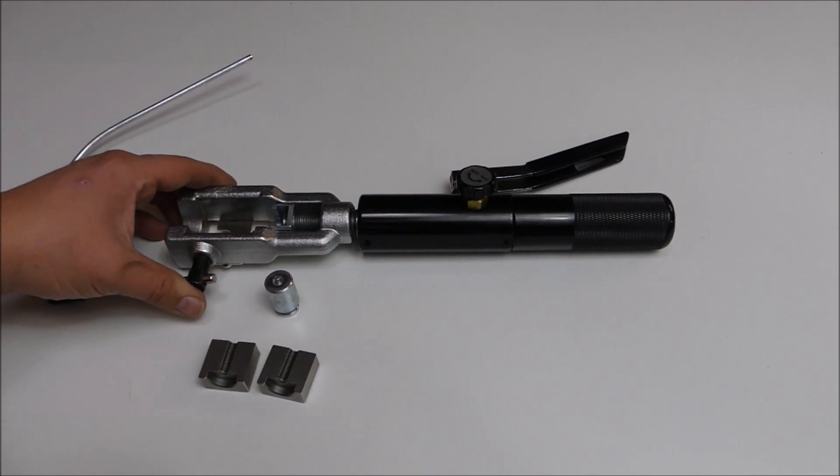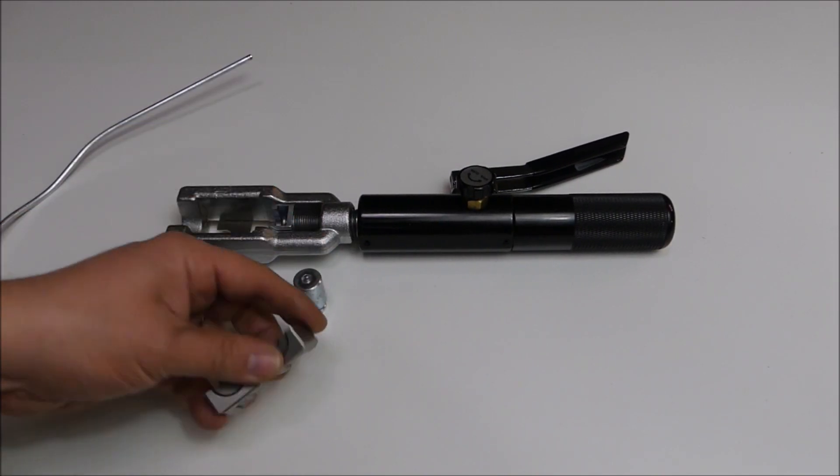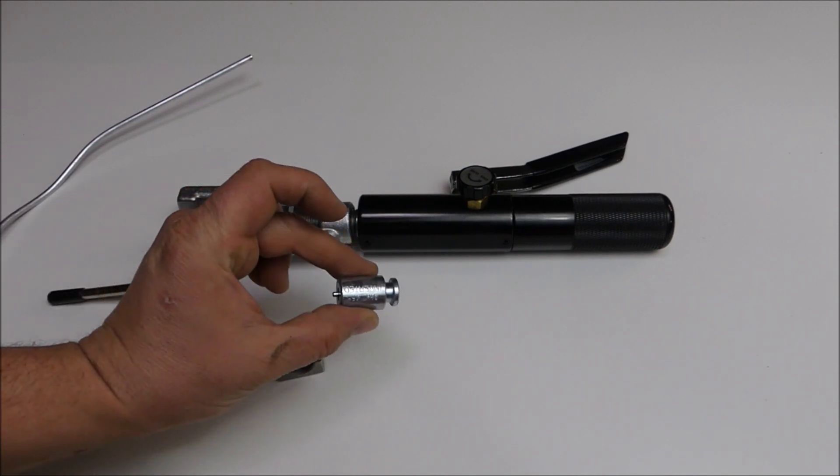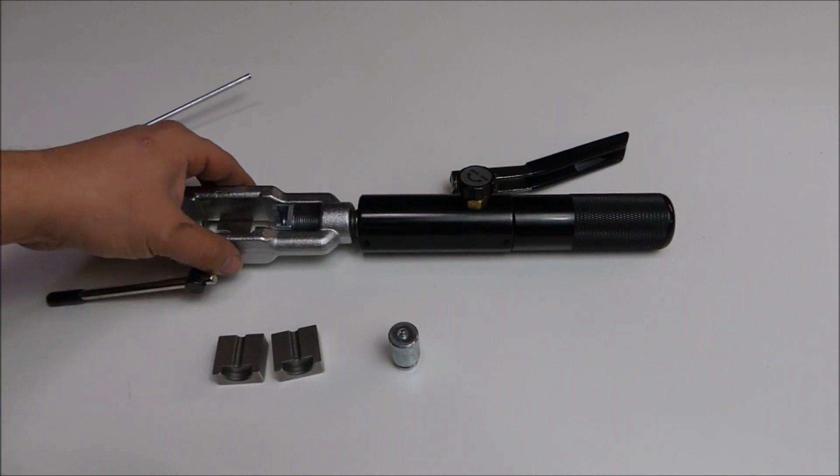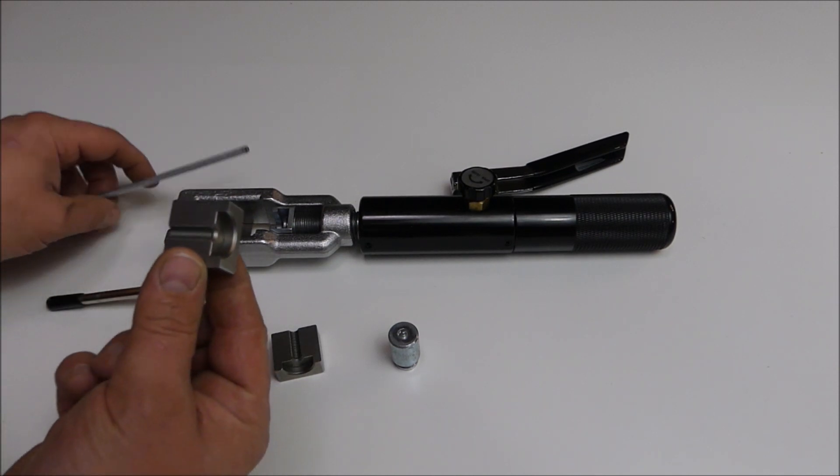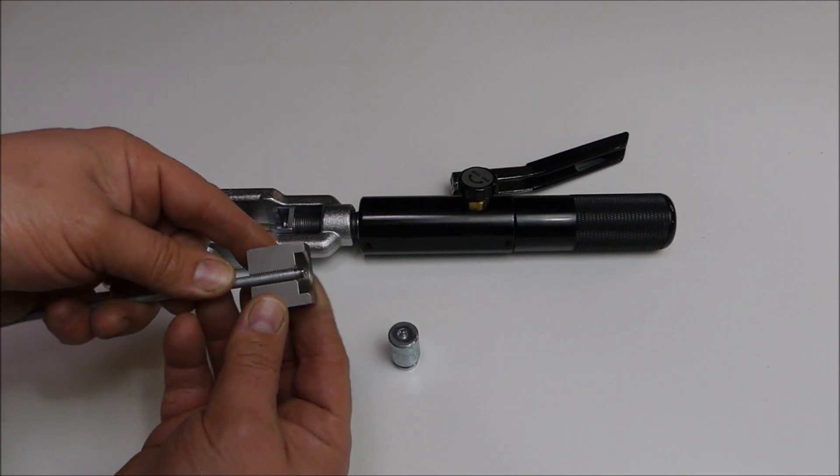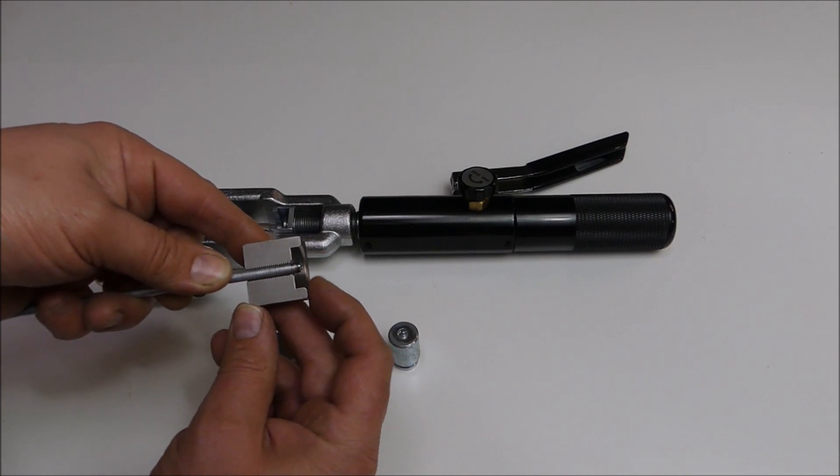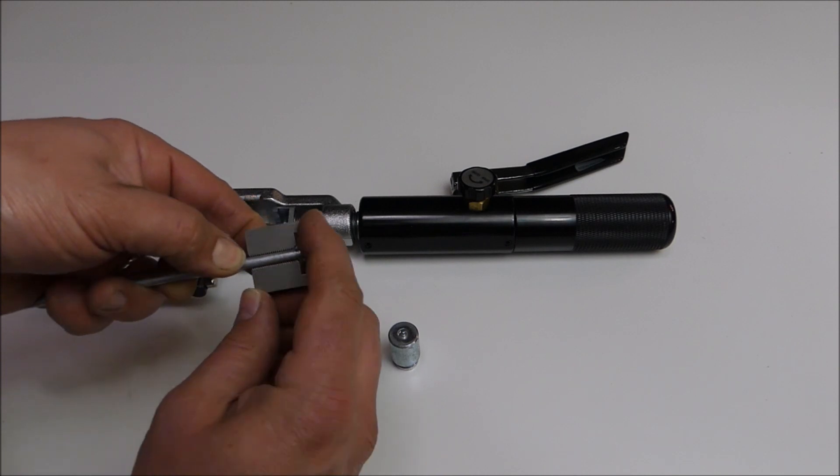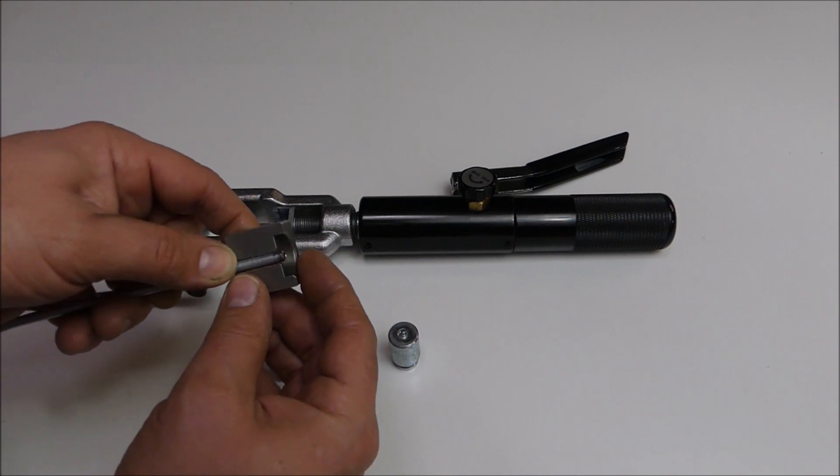Making a double flare is a two-step process. For this first step, you will need these two dies, this piece of the die, the tool, and of course your brake line. When you set your brake line in these dies, you want the front of the brake line to be flush with the edge of this die here. So you want to overhang the inside of the die by the depth of this hole.